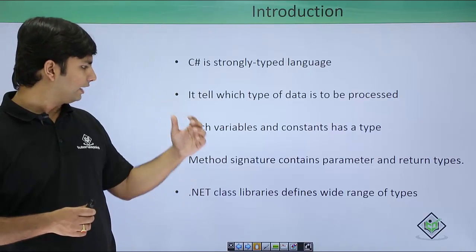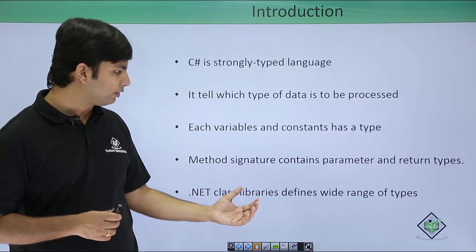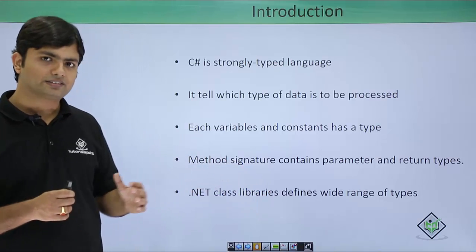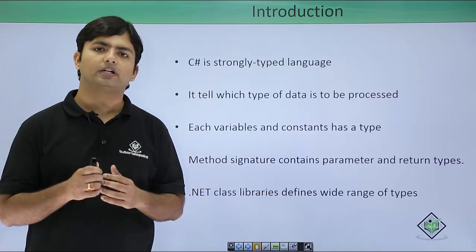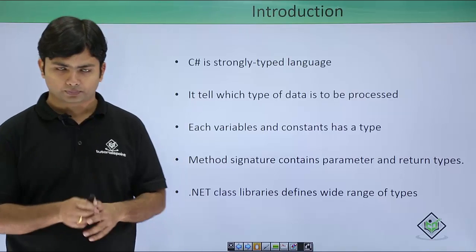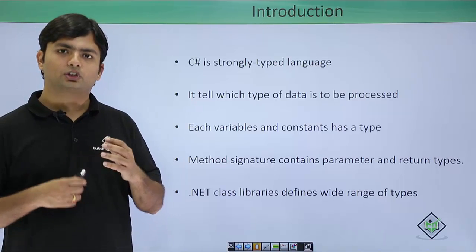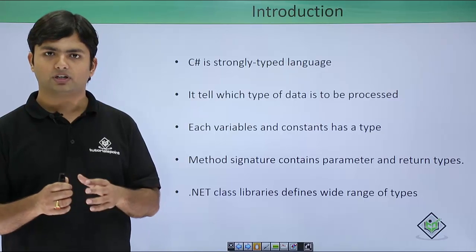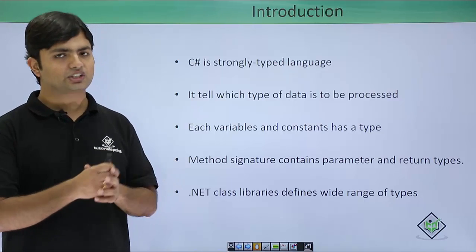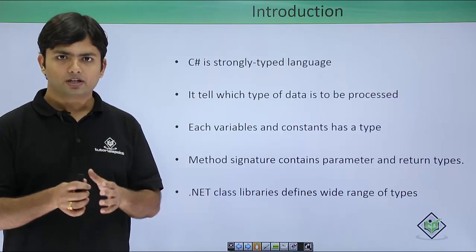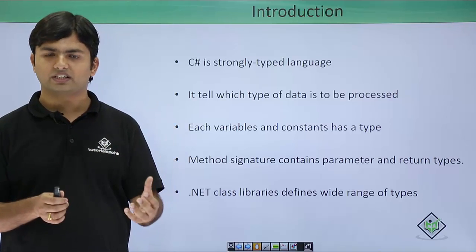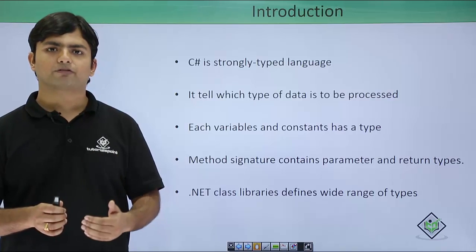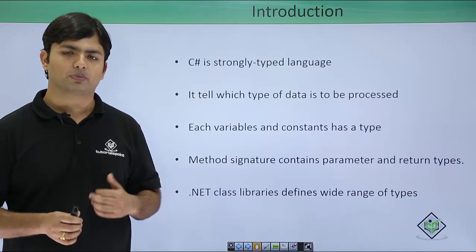When you talk about the .NET library, there is something called the Common Type System (CTS), which defines all the data types that are compatible with C# as well. The names in the .NET CTS and in C# may differ, but the internal definition is going to be the same.